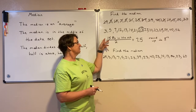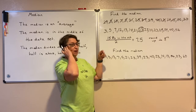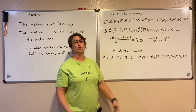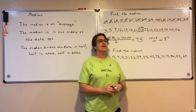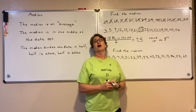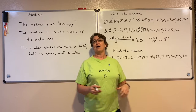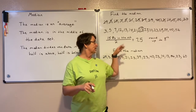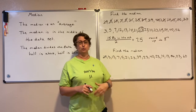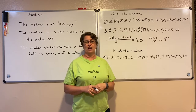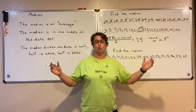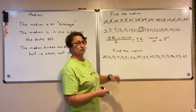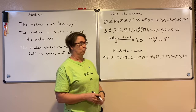This is a nice way to find the median if I have a really large data set. If I've got 500 numbers, going through and marking off each end would be difficult to find the one in the middle. But I can always just divide by 2 to find that middle one.